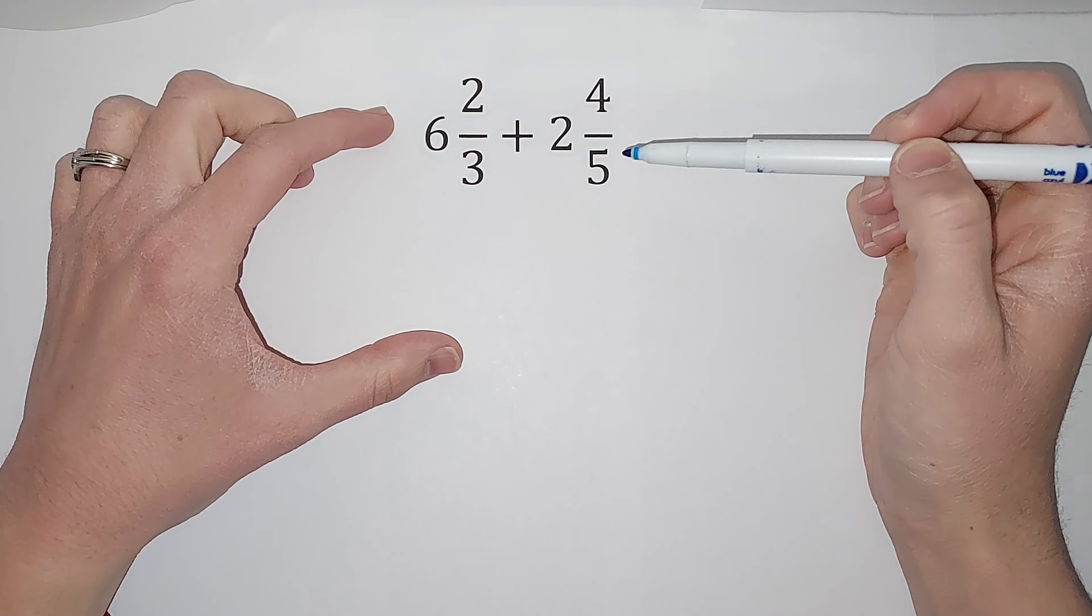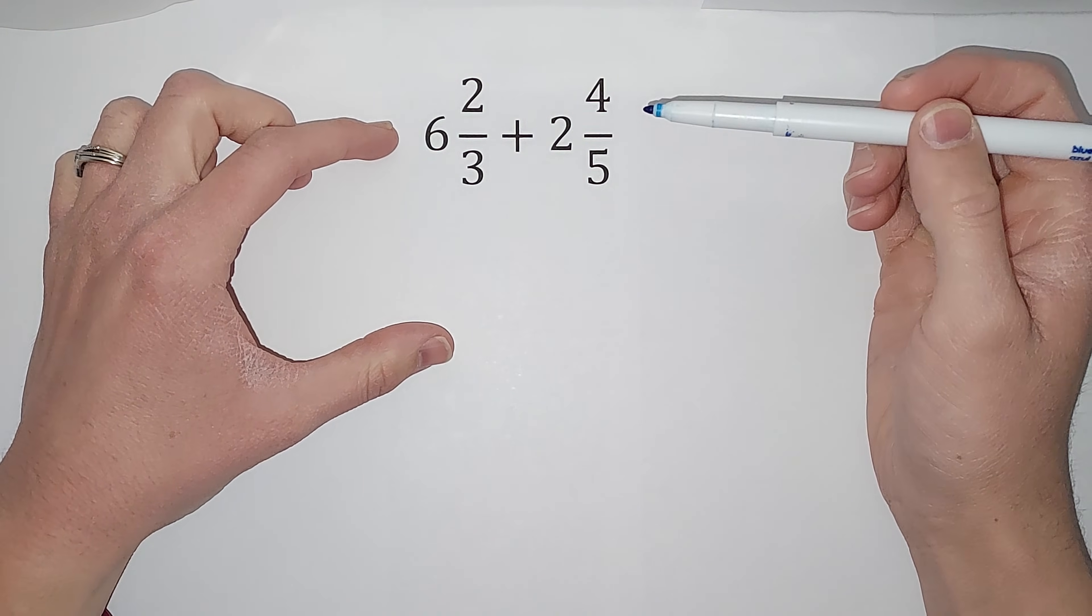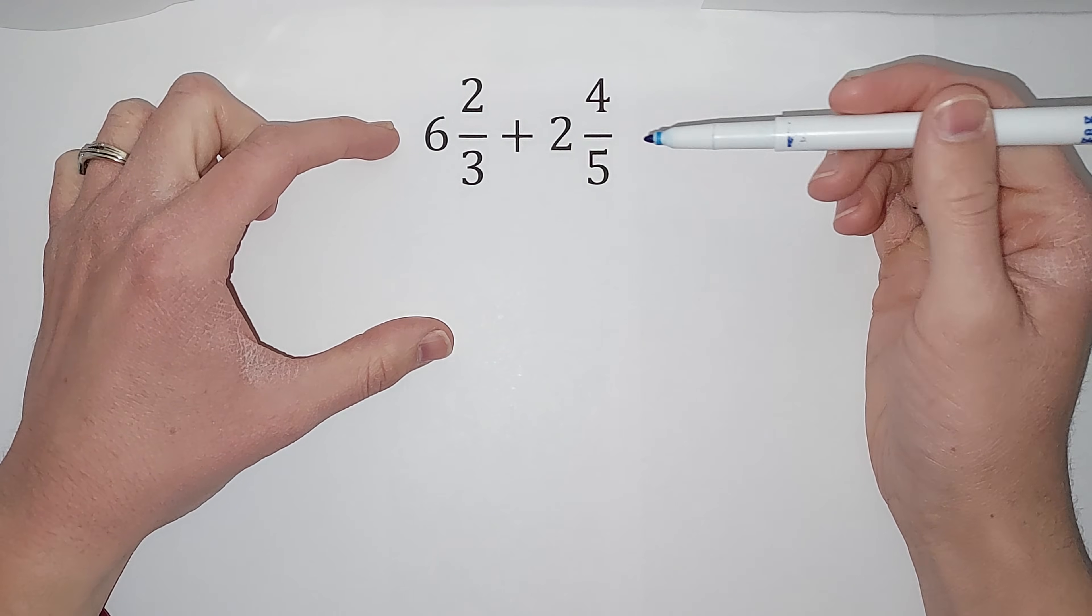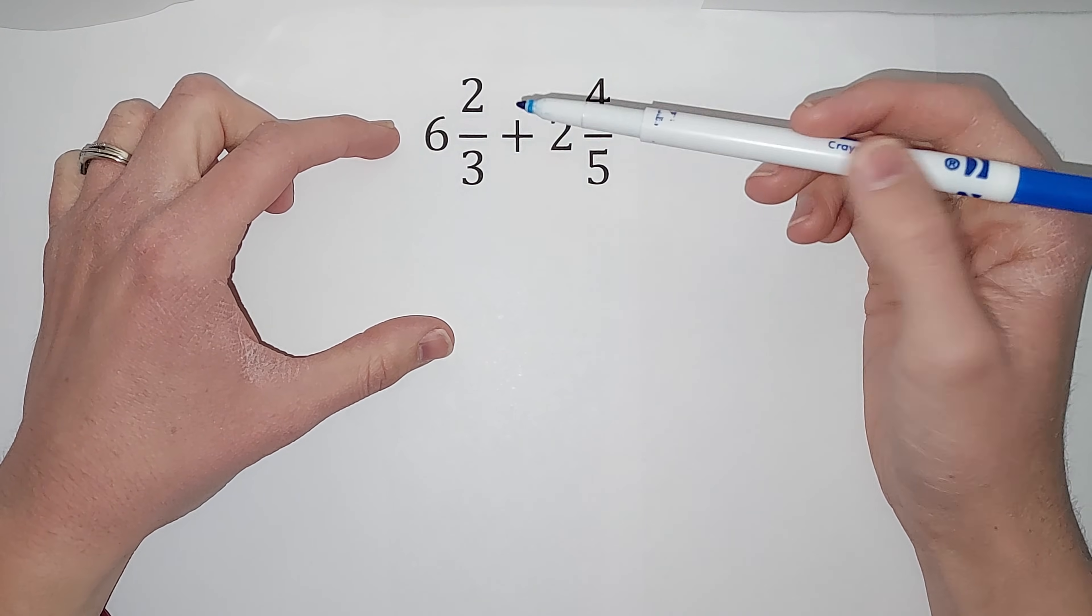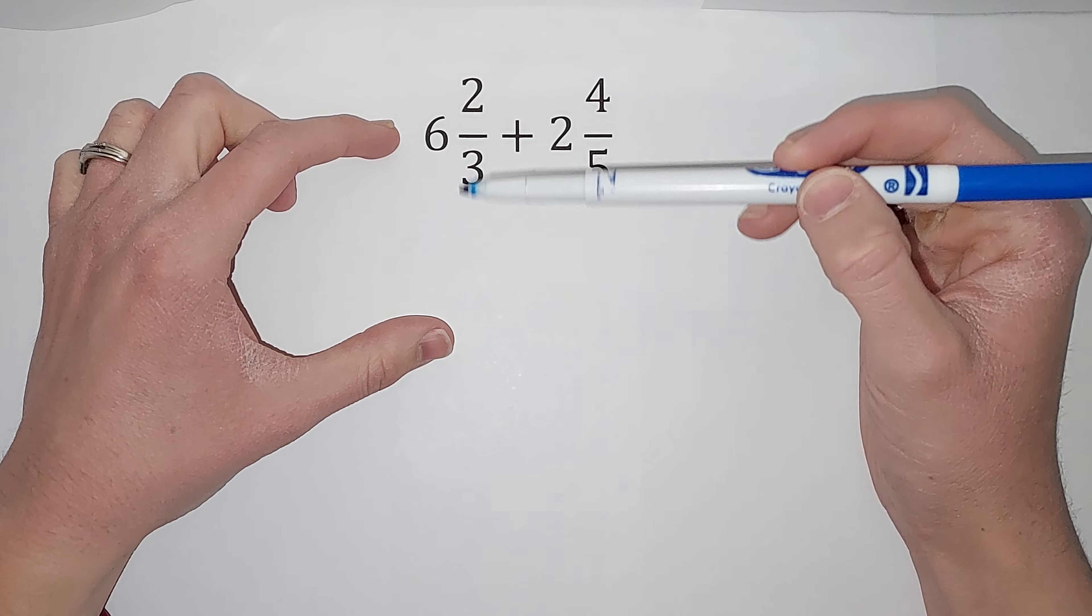Okay, before we add these, we are actually going to turn them into... No, they are mixed numbers. We're going to turn them into improper fractions. That's when the top is bigger than the bottom.